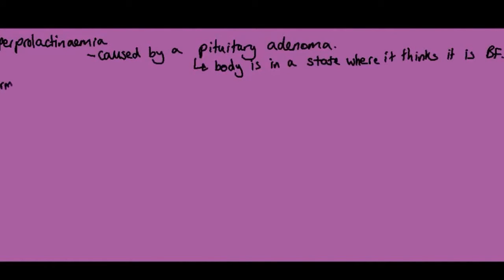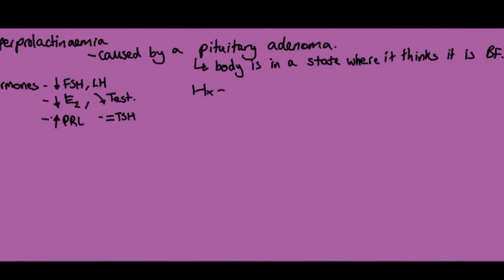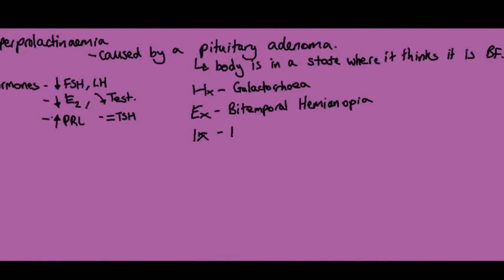Condition four is hyperprolactinaemia — the body is tricked into thinking it's breastfeeding when it's not. Hormones show low FSH and LH, low oestrogen, low-ish testosterone, increased prolactin, and normal TSH. In the history, the woman will complain of producing milk from her breasts — galactorrhoea. On examination you may find bitemporal hemianopia, as this condition is caused by a pituitary tumour near the optic chiasm. The main investigation is an MRI of the brain to identify a pituitary tumour. The main risk is osteoporosis due to decreased oestrogen.